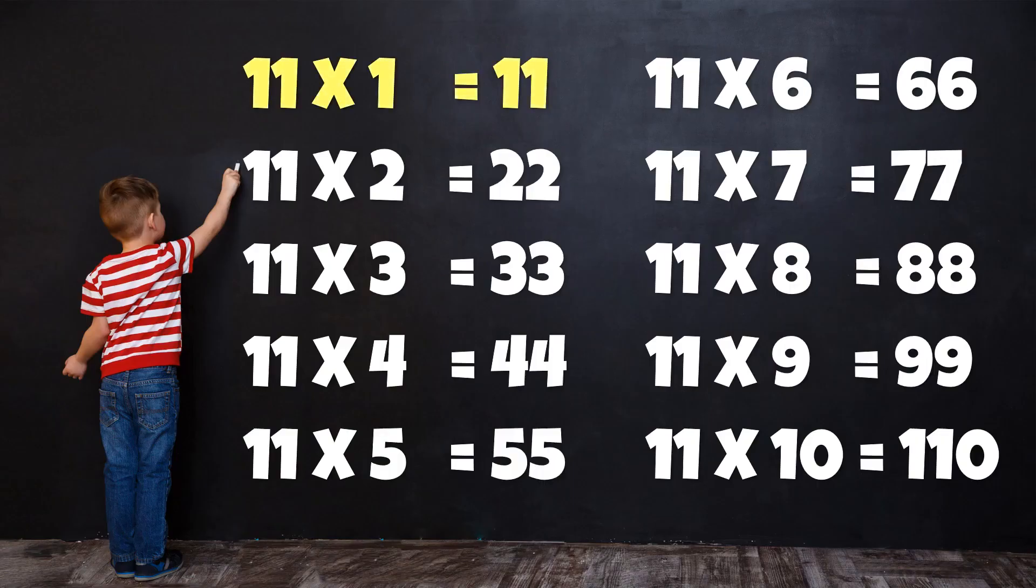Table of 11: 11 1s are 11, 11 2s are 22, 11 3s are 33, 11 4s are 44, 11 5s are 55, 11 6s are 66.